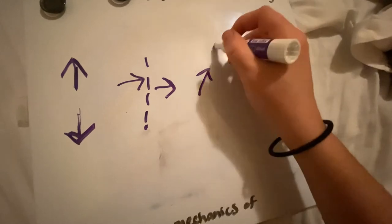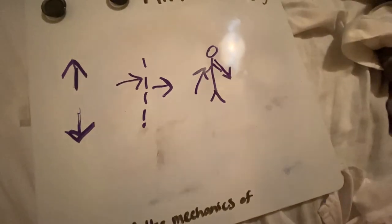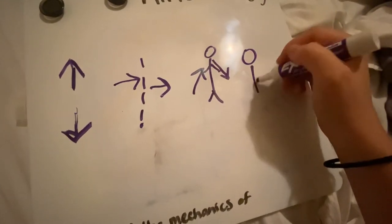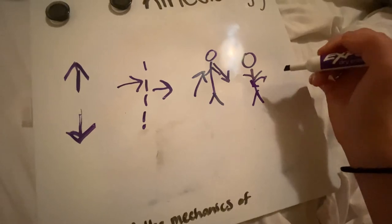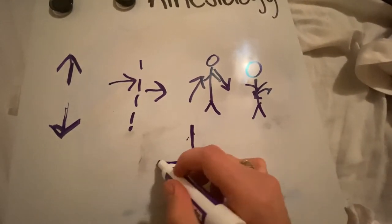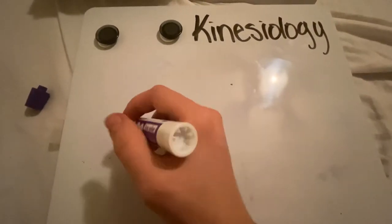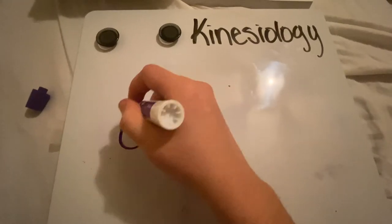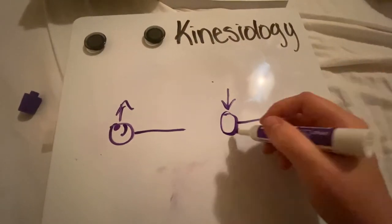We have proximal, which means towards the body — such as in a limb — and distal, which means away from the body. We have superficial, which means the outermost part of the body, and deep, which means the innermost part. We have anterior and posterior: if you were looking at the side of the body, anterior would be towards the front and posterior towards the back. Two more directional terms relevant to massage therapy are supine — laying face up — and prone — laying face down.